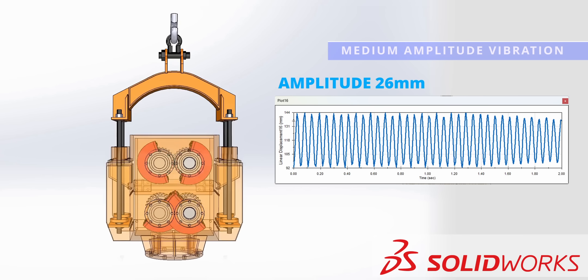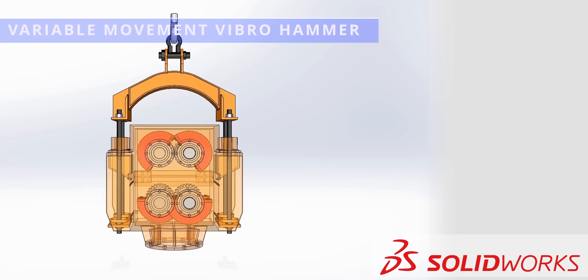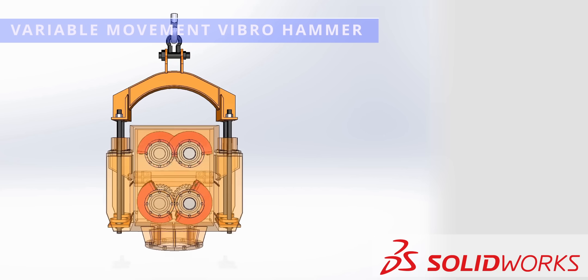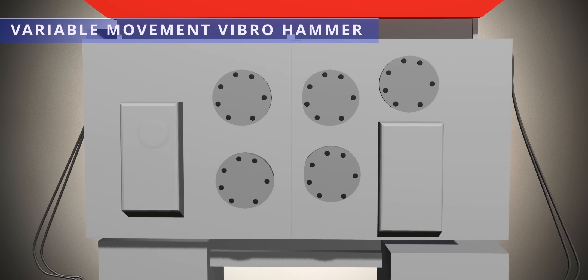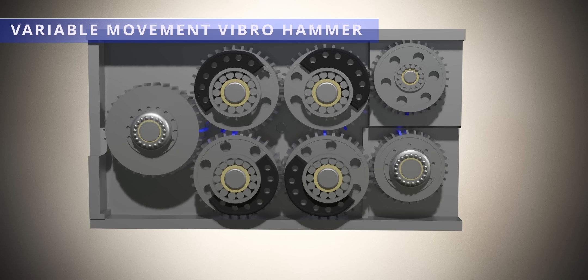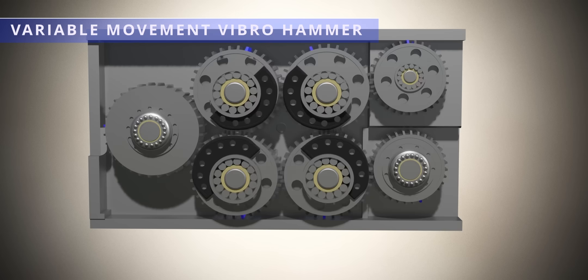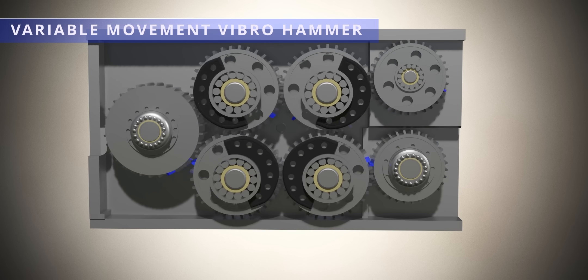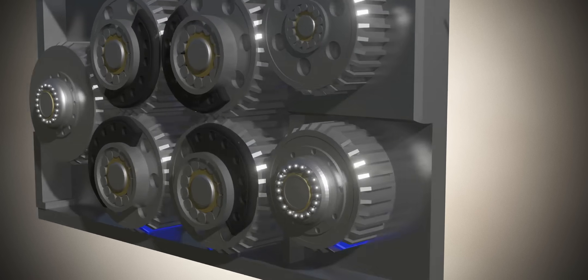When the operator wants to control the amplitude of vibrations, he is in fact changing the phase angle on the top eccentric masses. Such vibrohammers are known as variable moment vibrohammers. All these eccentric masses are driven by a hydraulic motor. This illustration clearly shows how a single hydraulic motor drives all the eccentric masses of a variable moment vibratory hammer.